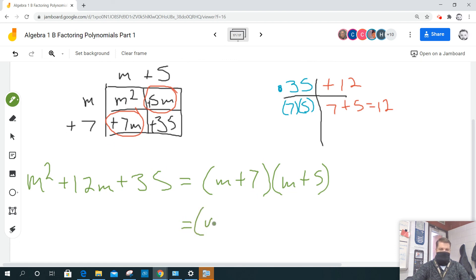Or somebody asked me earlier, does it matter what order they go in? No, you could have it written this way. m plus 5 times the quantity m plus 7. Either one of those will work. Okay?